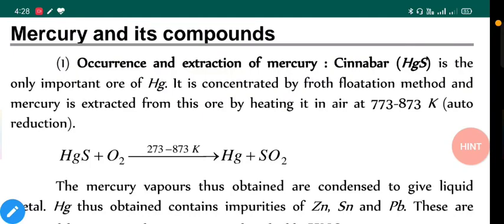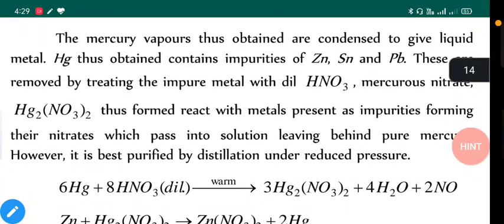We know that mercury is usually in liquid state; it is one of the metals which is in liquid state. Mercury vapors thus obtained are condensed to give liquid metal. Mercury thus obtained contains impurity of zinc, tin, lead, etc. These are removed by treating the impure metal with dilute HNO₃. Mercury nitrate Hg₂(NO₃)₂ thus formed reacts with metals present as impurity forming their nitrates, which pass into the solution leaving behind pure mercury.